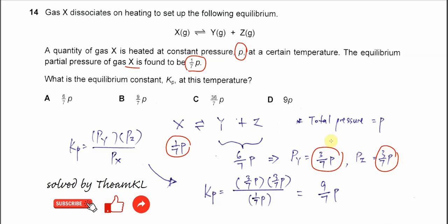Now we have the three partial pressures. The partial pressure of X is 1 over 7 P. Partial pressure of Y is 3 over 7 P, same as the partial pressure of Z.